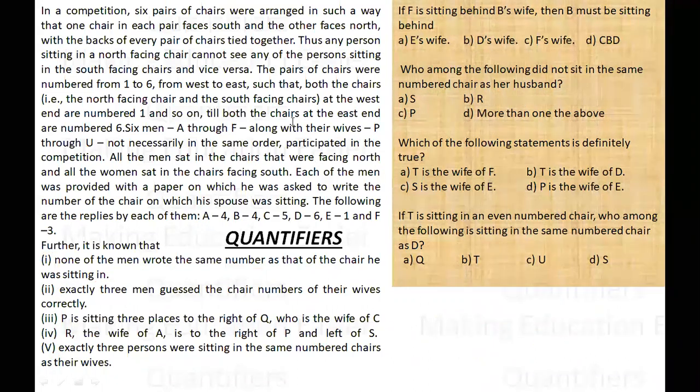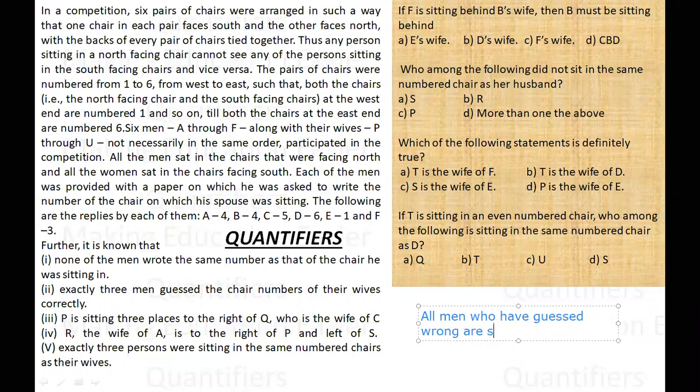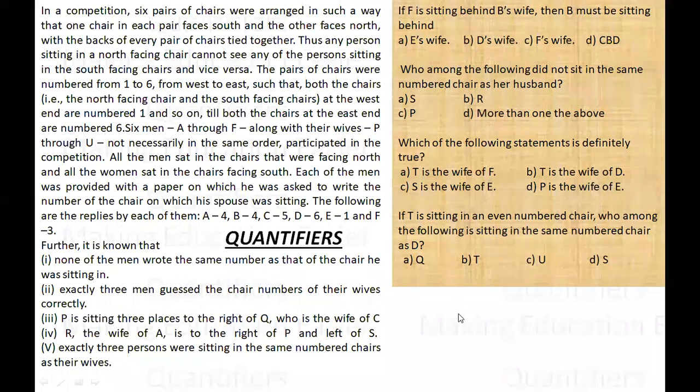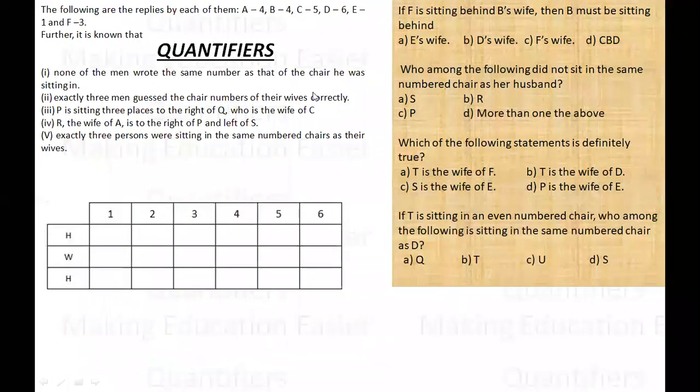Or all in all, what we can conclude is that all the men who have guessed wrong are sitting with their wives. Only those who have made wrong estimates will be sitting with their wives, because if they had made correct estimates, they would not be sitting with their wives, as no person estimated the chair where he was sitting. So this is a very interesting point and on this we will bank our set. This is the area where we will solve our set.